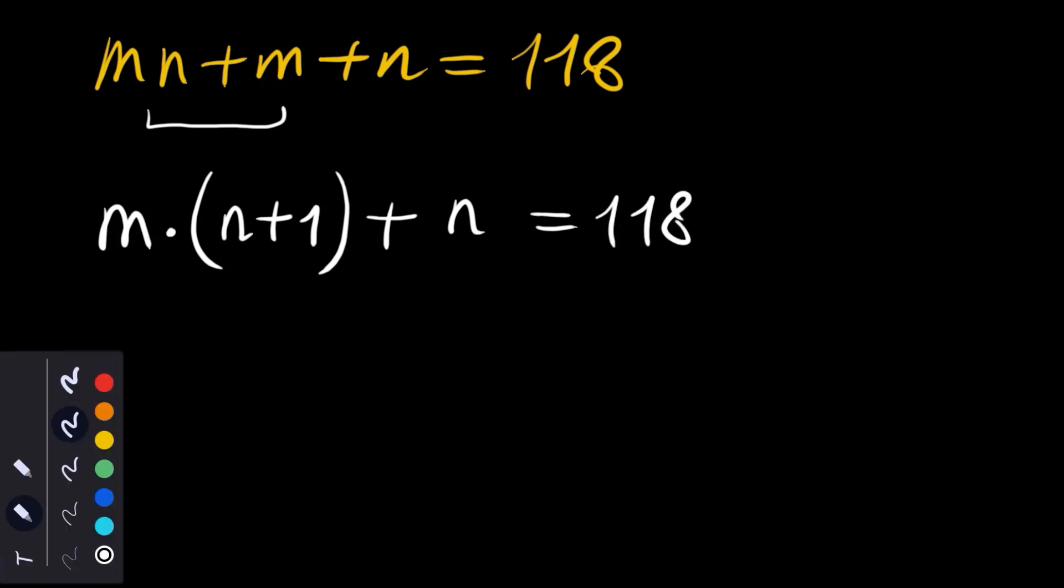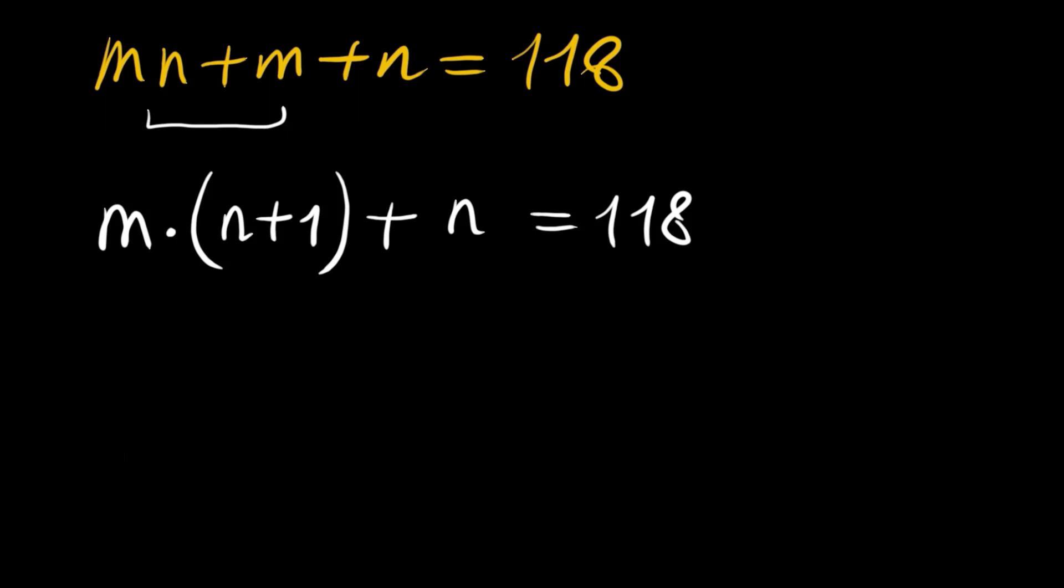Here we will add 1. This is a trick you should know in this question. Add a plus 1 here and here to write m times (n plus 1) plus 1 times (n plus 1), and this is equal to 119.